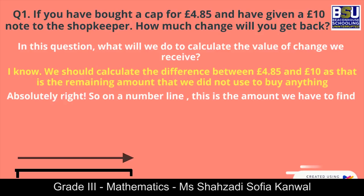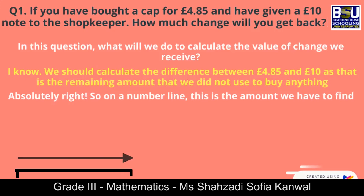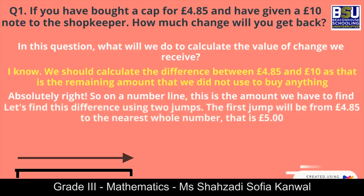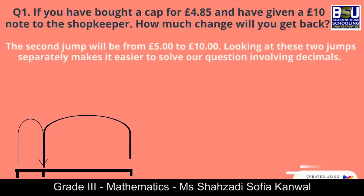Absolutely right. So on the number line, this is the amount we have to find. Let's find this difference using two jumps. The first jump will be from 4.85 pounds to the nearest whole number, that is 5 pounds. The second jump will be from 5 pounds to 10 pounds.